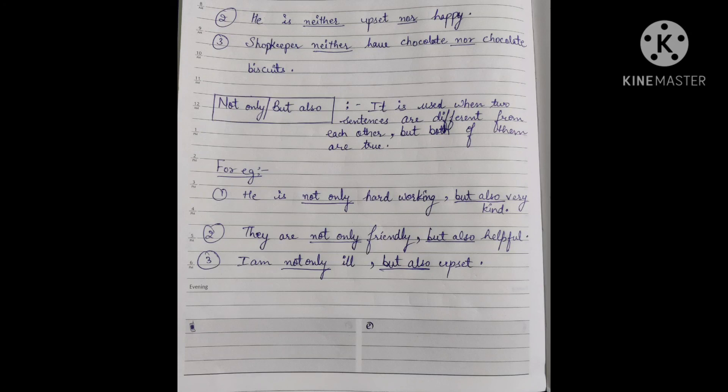Third example: 'I am not only ill but also upset.' I am not just sick, I am also sad. Both sentences are different and both have equal importance - both are true facts. So we combined them using correlative conjunctions 'not only...but also'. I think you all have understood how correlative conjunctions are used. There are many more correlative conjunctions, but for you, this much is enough.